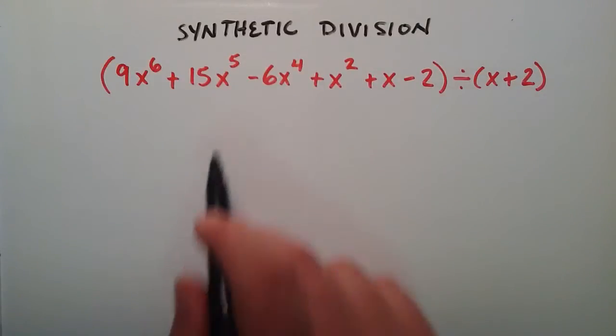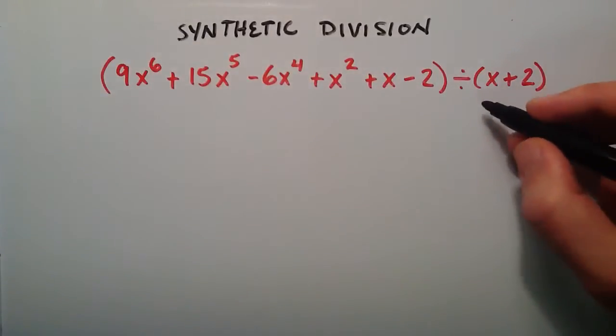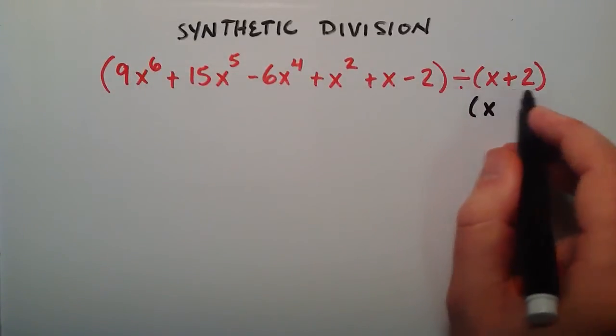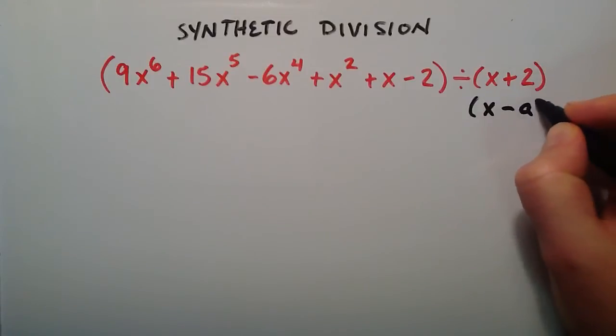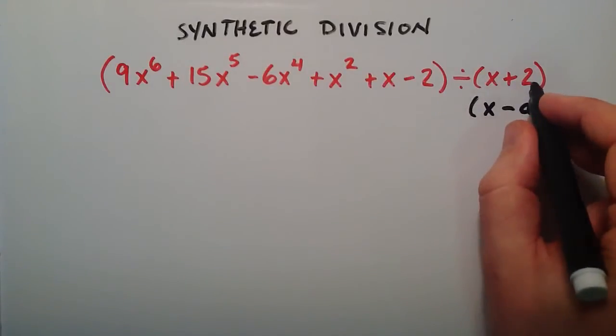So we're going to use synthetic division to solve this problem. And once again for synthetic division to work we need to have this big polynomial divided by some polynomial in the form of x minus a. So in this case we have an x plus something, we don't have an x minus something.